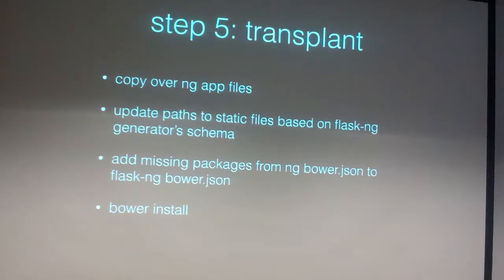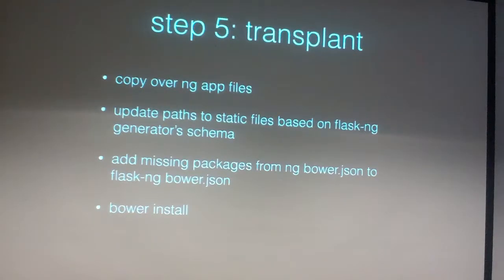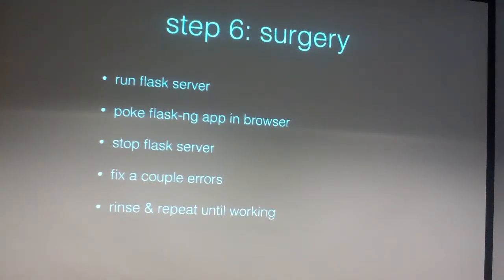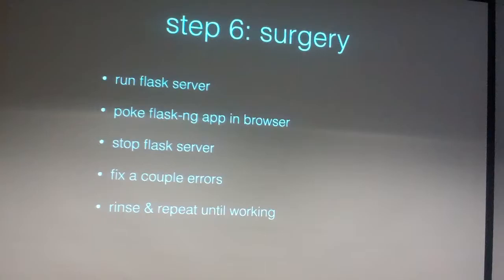In breaking things, I just transferred the files from the working Node project to my new scaffold, then changed the obvious things like the paths. The two different projects had different opinions on directory layout, so I chose a directory layout, installed the missing Bower packages, and then got into the fun part: actually making the app work. I started the Flask process and then iteratively fixed individual things that were broken.